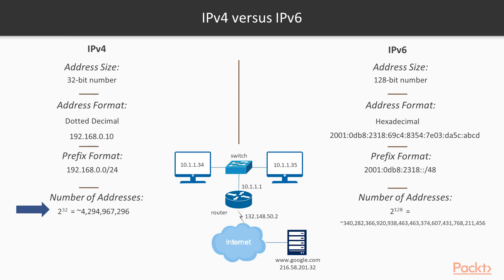To combat this problem, the Internet Engineering Task Force came up with IPv6. With IPv6, we have an insane number of addresses available. Because IPv6 uses a 128-bit number, we have about 350 undecillion unique addresses that we can use in our networks, so we probably shouldn't run out any time soon. To deal with these incredibly large numbers, we use hexadecimal notation.